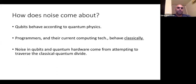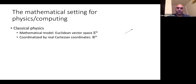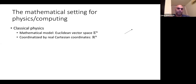To get a good understanding of how one would do that, let's look at the mathematical setting for physics and computing. I'm talking about mathematical models and terminology — I'll keep calculations to a minimum. So, classical physics: how do we model that mathematically?